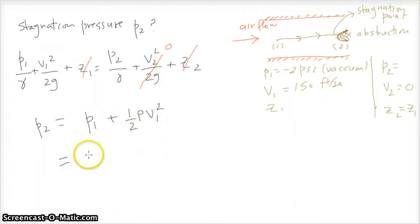So we will just plug in the corresponding values. The pressure is 2 psi and we have to convert it into PSF. So this will be minus 2.0 times 144 plus half, now rho for air is 0.00238 times the velocity, which is 150 squared. And this gives the stagnation pressure to be minus 1.81.